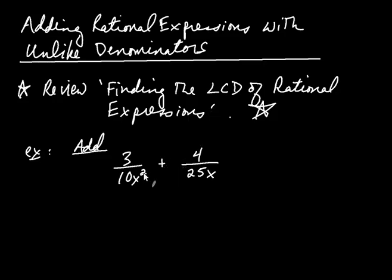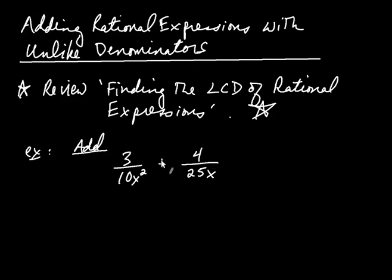All right, so now we're adding, as an example, adding these two rational expressions together. Remember, all a rational expression is is sort of like a fancy fraction — you simply have polynomials in the numerator and the denominator. But whenever you add two fractions or two rational expressions, you always need a common denominator. So that's why we need to learn how to find the least common denominator.